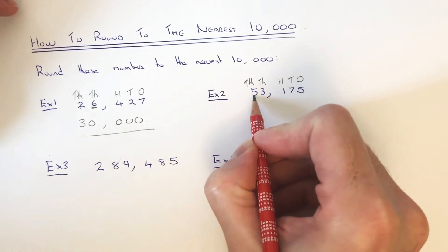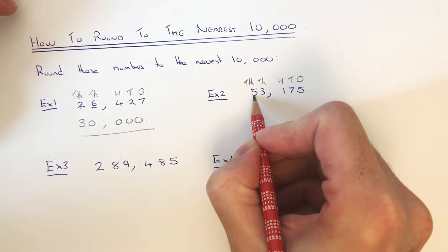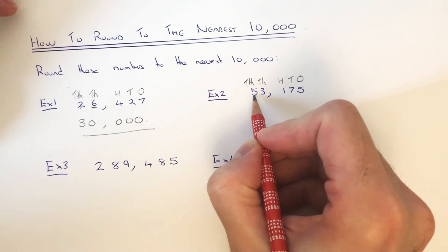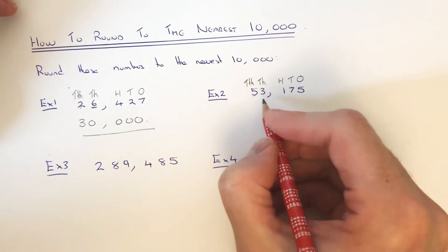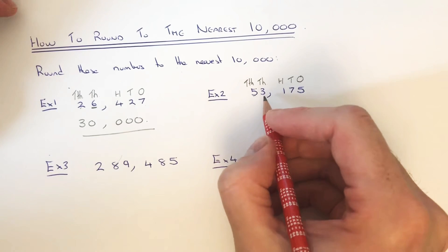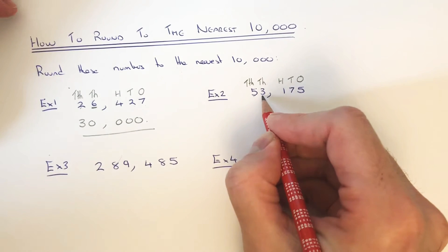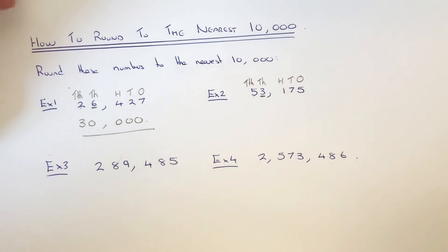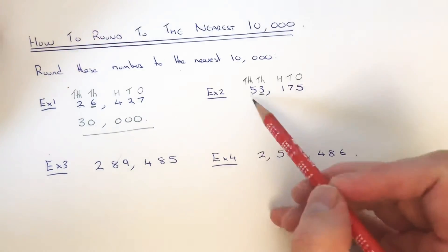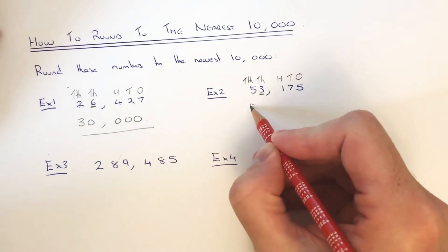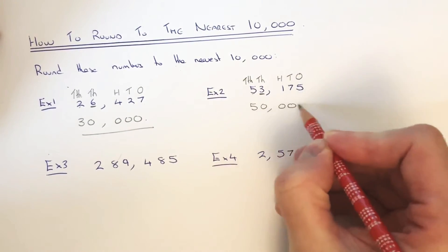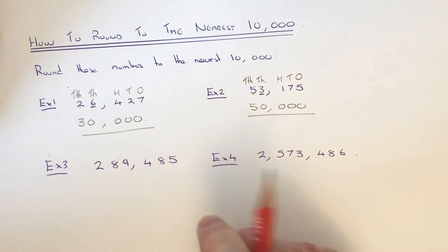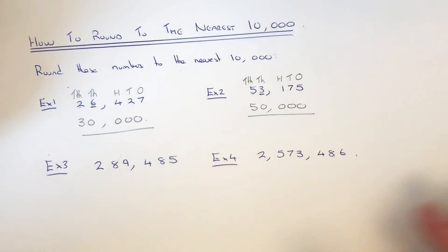So our two choices would either be fifty thousand if we round it down, or sixty thousand if we round it up. To decide, look at the number in the thousands column, which is a three. Since that number is less than five, we round this number down to fifty thousand.